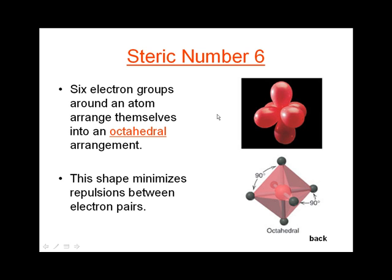Steric number six — the highest steric number we're going to learn about. When there are six electron groups, they arrange themselves into what's called an octahedral arrangement. It is called octahedral for a similar reason that steric number four was called tetrahedral — 'tetrahedral' had four sides, while 'octahedral' has eight sides. Four sides are visible here, with four other sides around the back, for a total of eight sides. There are six vertices to this shape and a 90-degree angle between all electron groups.